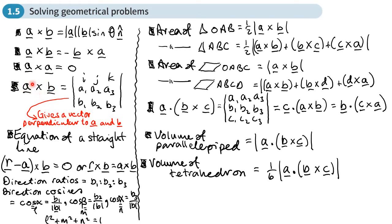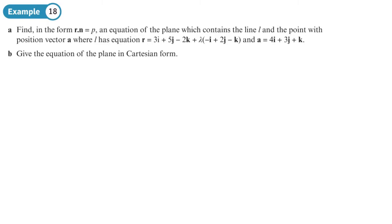The cross product of A and B gives you a vector which is perpendicular to A and B. For finding the form R dot N equals P, the way we find P is A dot N — a point in the plane — and you do the dot product of that with a normal to the plane, which contains a line L, given the equation of the line here.